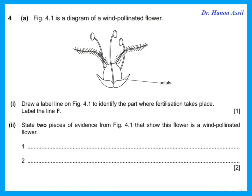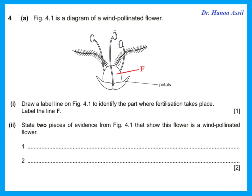Question 4: figure 4.1 is a diagram of a wind-pollinated flower. Draw a line to identify the part where fertilization takes place. In any flower, fertilization takes place in the ovary. The ovary is that part from which the feathery things are coming out.